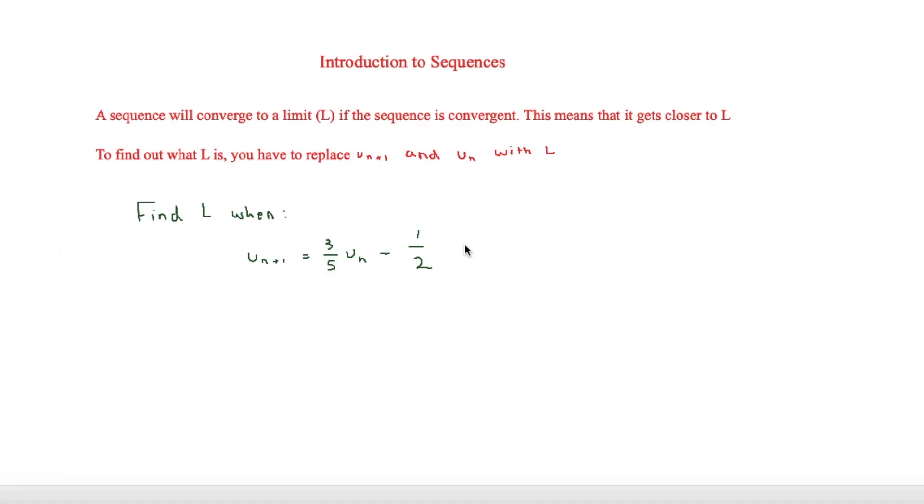So the next thing to look at is limit. And a sequence will converge to a limit if a sequence is convergent. And this means that it gets closer to l and there's the opposite of divergent. But to find out what l is, you have to replace un plus 1 and un with l. So let's look at a question.